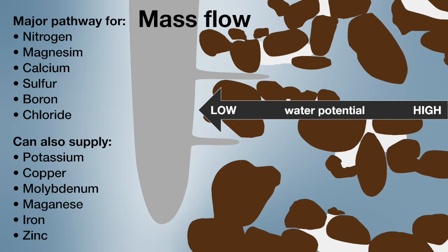Potassium, copper, molybdenum, manganese, iron, and zinc can also be supplied via mass flow.